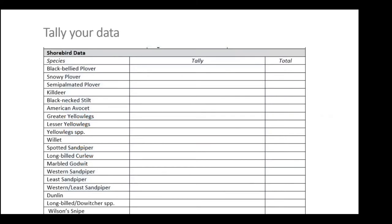Another good practice is to write down your estimates in the field. Using eBird is fantastic, but having a data sheet or notebook is very helpful. You can write down a tally as you conduct surveys — you may see 50 black-bellied plovers here and 50 there, which is hard to hold in your mind when you start seeing stilts, avocets, and yellowlegs. Just write it down and add it all up at the end.